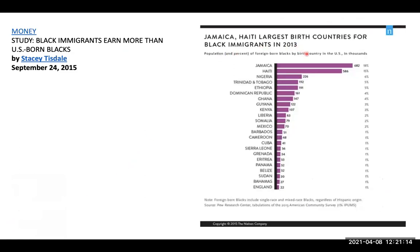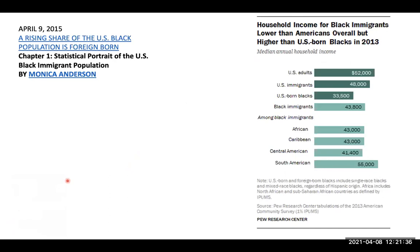Looking at 2013 data on black immigrants: household income for blacks is lower than Americans overall, but higher than U.S.-born blacks. Black immigrants had a household income of $43,800, but U.S.-born blacks had $33,500 — almost $10,000 less. Among black immigrants, you have Africans, Caribbean, Central Americans, and South Americans. One in five black immigrants lived below the poverty line in 2013 — that's 20%. But U.S.-born blacks, the American descendants of slaves, were at 28%.